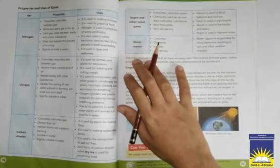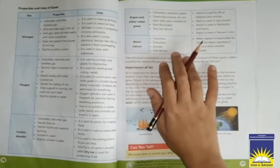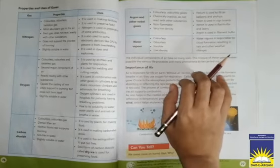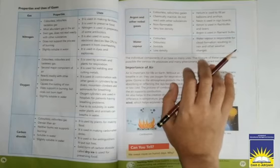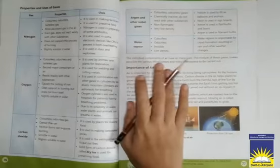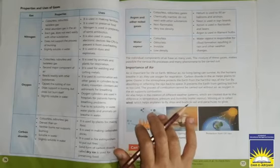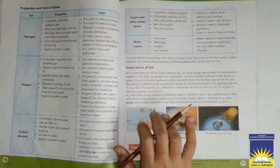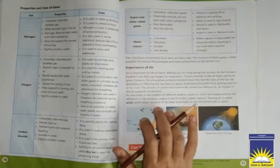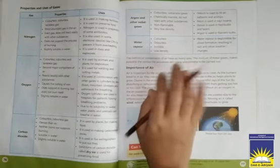So now we are going to discuss about properties of water vapors. Water vapors are colorless, odorless, invisible and low density. Uses of water vapor: water vapor is responsible for cloud formation resulting in rain and other weather changes. Water vapor se rainfall hoti hai, cloud form hoti hai, iske ilava weather change hota hai.